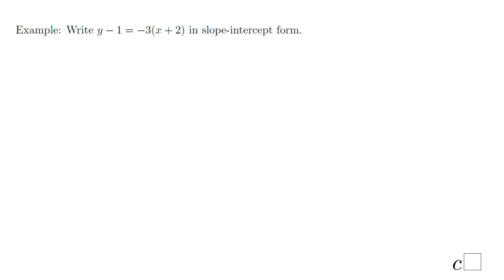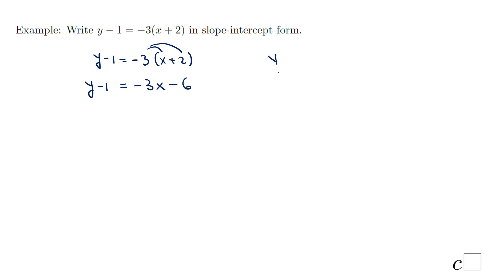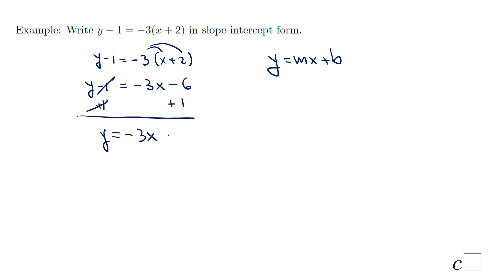We can also convert point-slope form to slope-intercept form. Starting with y minus 1 equals negative 3 times (x plus 2), apply the distributive property to get negative 3x minus 6. Remember slope-intercept form is y equals mx plus b. Add 1 to both sides to eliminate the minus 1, giving y equals negative 3x minus 5. This is the slope-intercept form. Note this form is unique, whereas point-slope form depends on which point you use.